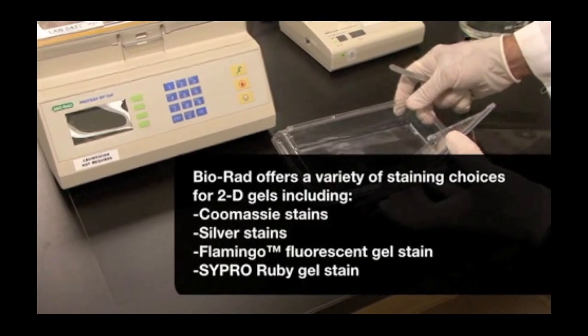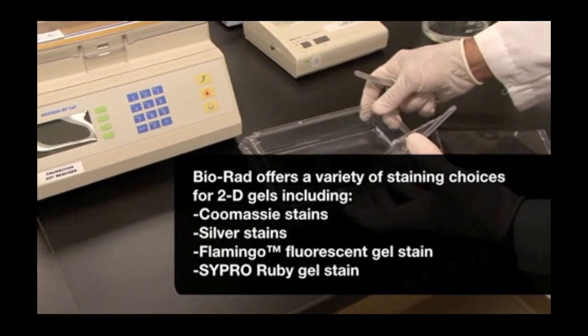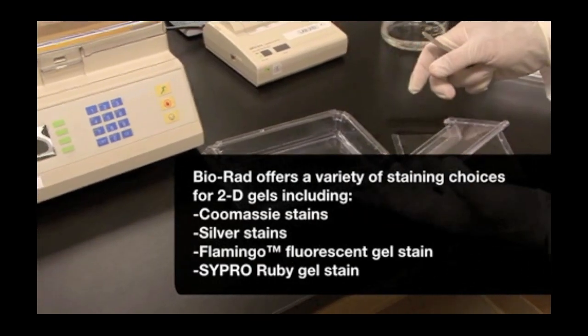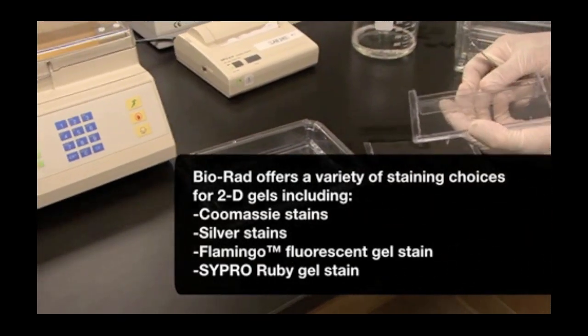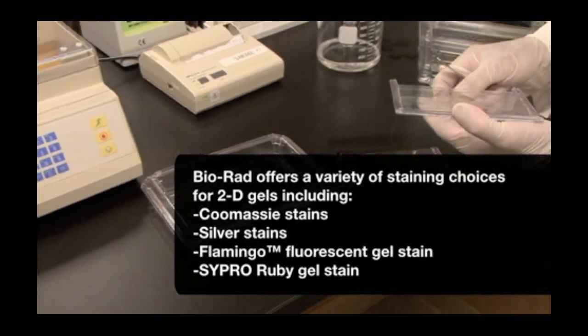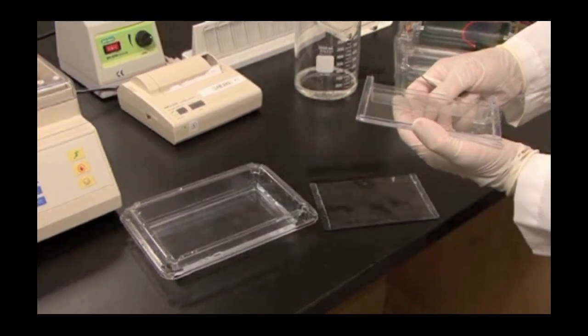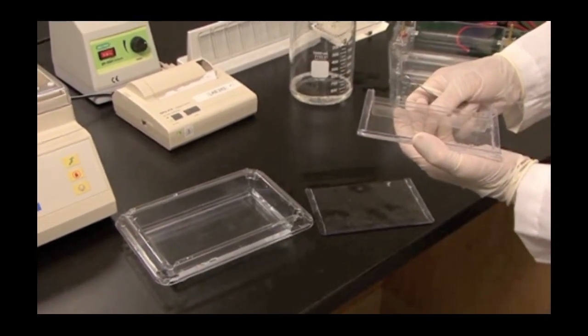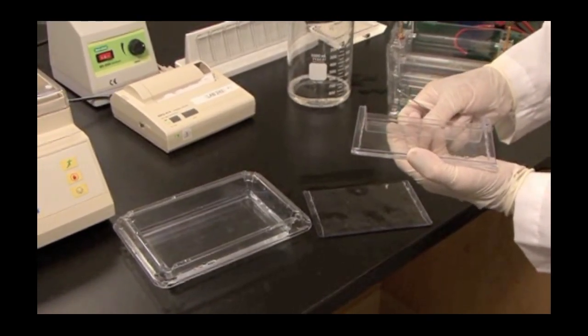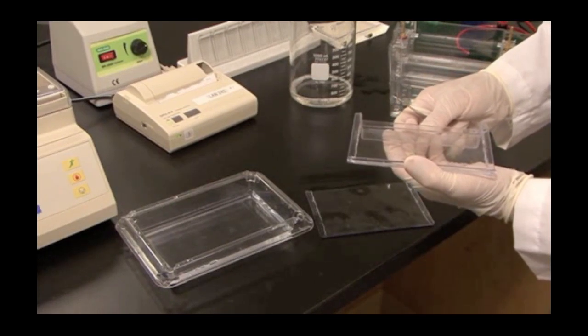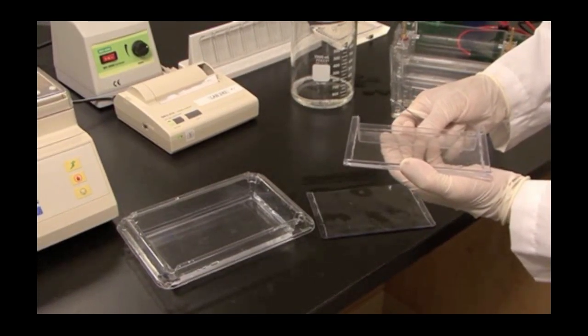Bio-Rad offers many different staining choices for 2D gels. Ranging from the visual stains, the traditional Coomassie and silver stains, to the fluorescent stains, Flamingo and Cypro. In this case, I am staining this gel with Bio-Safe Coomassie. The first step requires three 10-minute rinses in water to remove SDS from the gel.